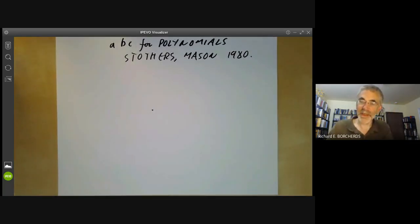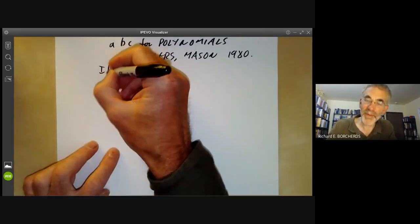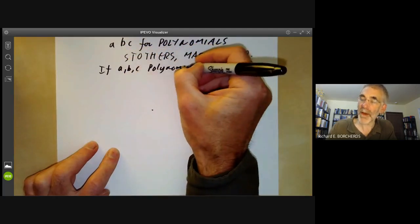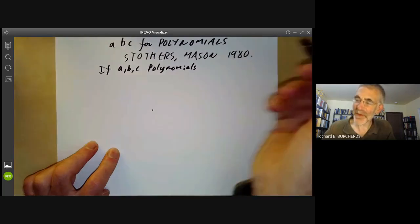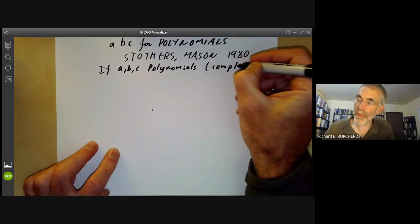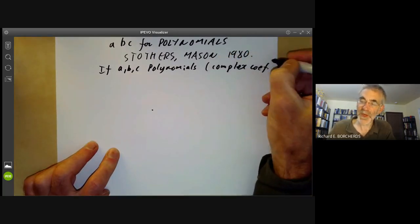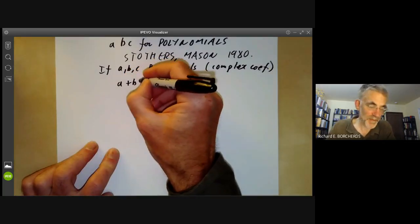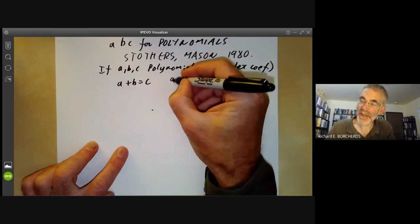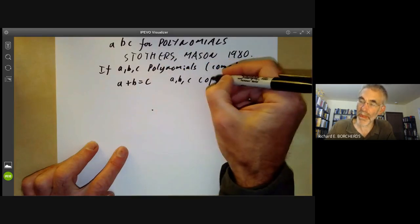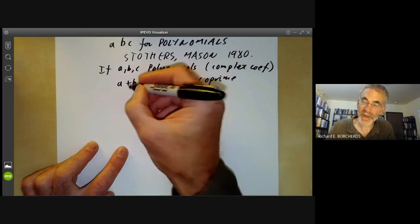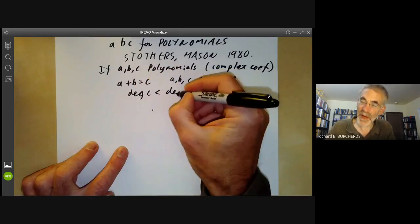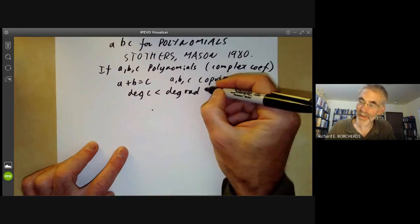And what it says is that if A, B, C are polynomials, let's make them have complex coefficients, though this isn't really necessary. And suppose that A plus B equals C and A, B, C are co-prime. Then the degree of C is less than the degree of the radical of A, B, C.